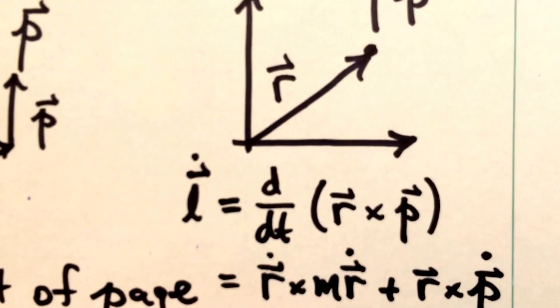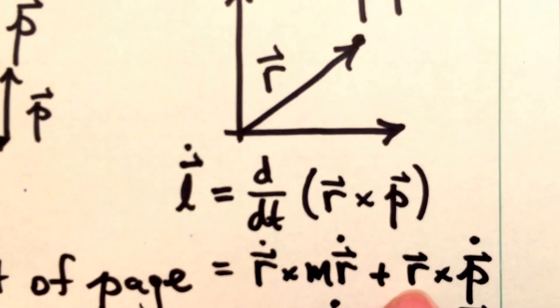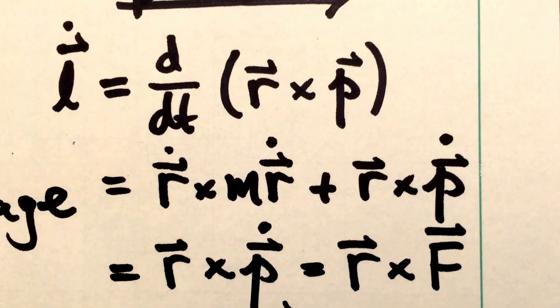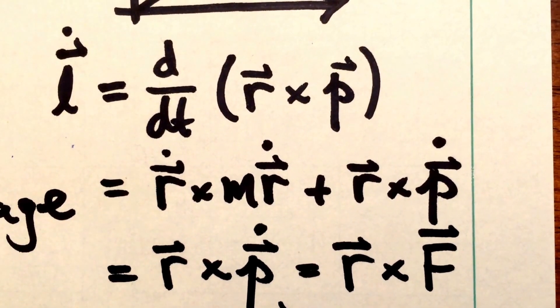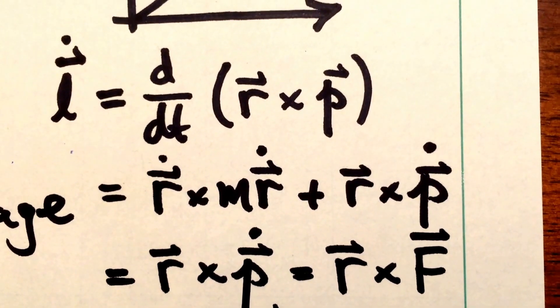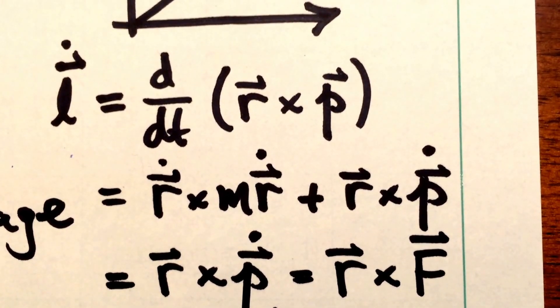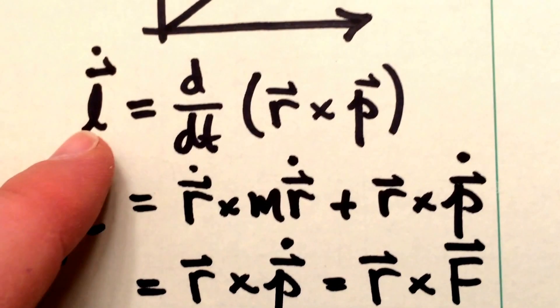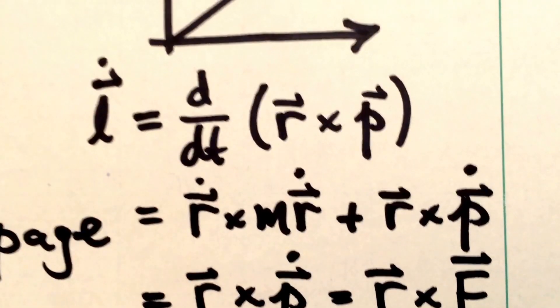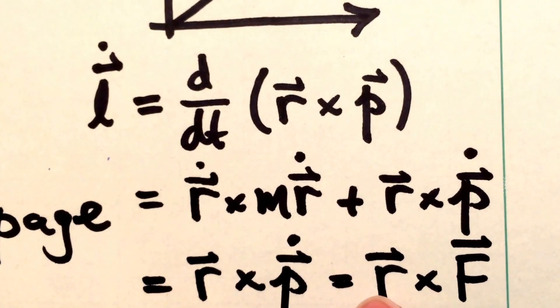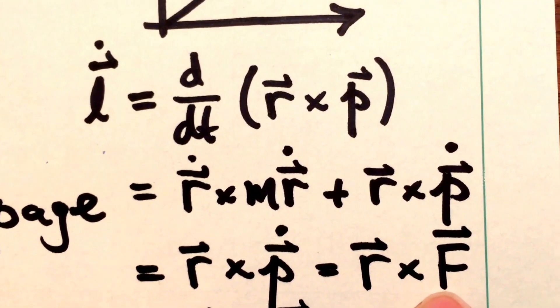So all that's left is the second term, which in this case is r crossed into p dot. And you recall from Newton's third law that p dot is just the force on the particle. And so we find that the time derivative of the angular momentum vector is just the cross product of the position vector with any forces acting on that particle.